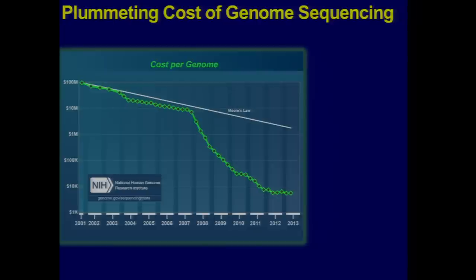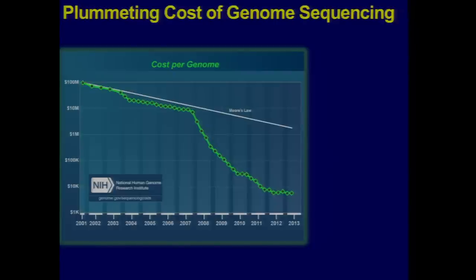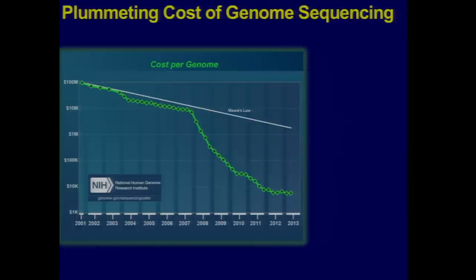Not quite there, but getting closer every day. For $1,000, that sounds like about the cost of an MRI or a lot of other clinical tests, which is why the idea of sequencing tens of thousands of people as part of research studies and also considering sequencing individual genomes of patients has come to the forefront.